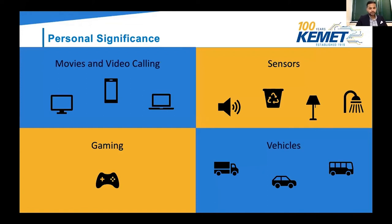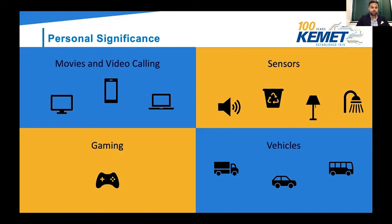So how does 5G affect your daily life? You can stream a high definition full-length movie in about 20 to 30 seconds, compared to up to 20 minutes today. Video calling will be smoother than ever with no buffering or connection issues. Sensors will be implemented throughout the city and can track traffic, pollution, and parking. The gaming industry will move from console-based systems to cloud-based subscription services, letting users stream games to any device. Virtual reality gaming will also become much more viable with 5G.